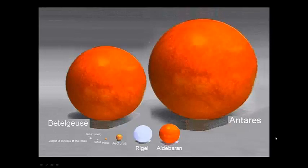If you look at this sun Arcturus, the Sun would be the size of a pixel, Jupiter would be invisible, and all of these other stars would be even larger.